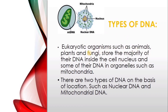Eukaryotic organisms such as animals, plants, and fungi store the majority of their DNA inside the cell nucleus and some of their DNA in organelles such as mitochondria. There are two types of DNA on the basis of location: nuclear DNA and mitochondrial DNA — defined by where the DNA is present, either in the nucleus or inside the mitochondria.